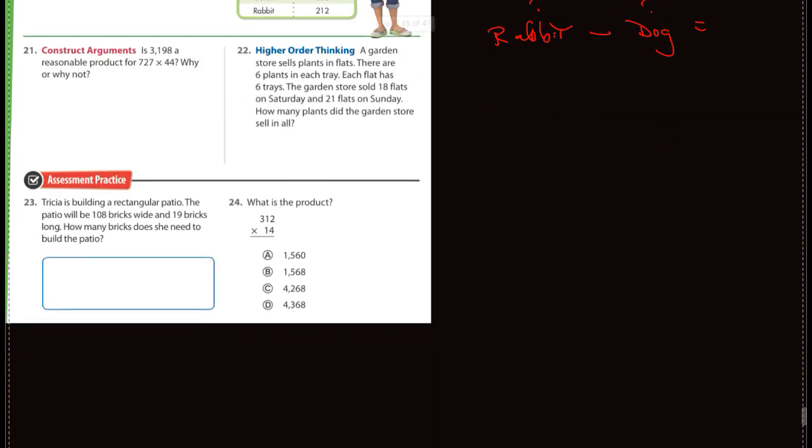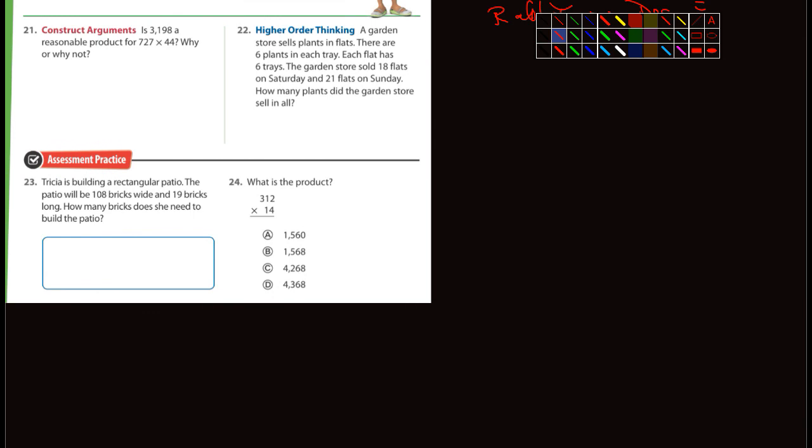All right, let's see here, the last three or four. You can answer 21 on your own, I think. A garden store, 22, garden store sells plants in flats. There are six plants in each tray, and each flat has six trays. The garden store sold 18 flats on a Saturday and 21 on a Sunday. How many plants did the garden store sell in all? Well first off, let's back up here.